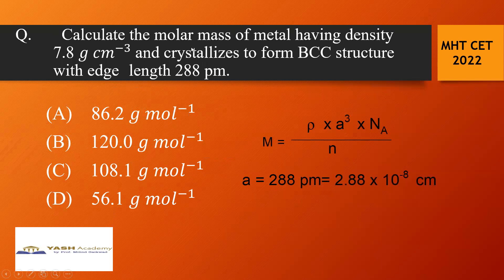Next one, calculate the molar mass of metal having density 7.8 gram per cm cube and crystallizes to form BCC structure with edge length 288 picometer. These are the options. For calculation you can use this formula. Molar mass is equal to density into a cubed into Avogadro's number divided by n.